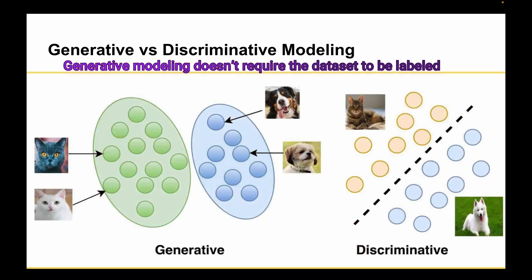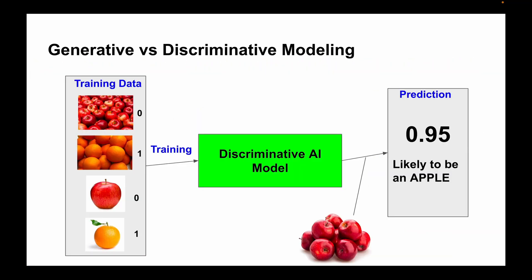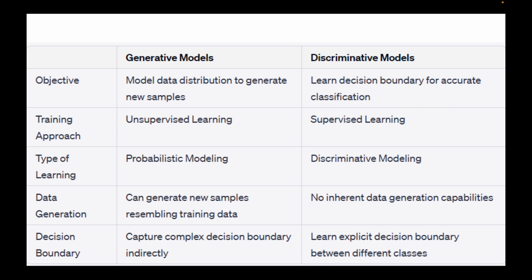On the other hand, generative modeling doesn't require the dataset to be labeled because it concerns itself with generating entirely new images rather than trying to predict a label of an image. So I hope I am clear with distinguishing between generative versus discriminative modeling.